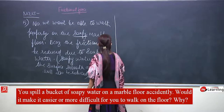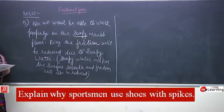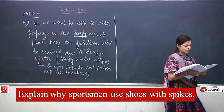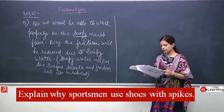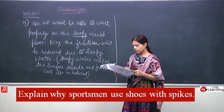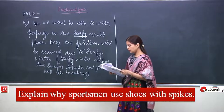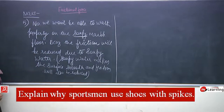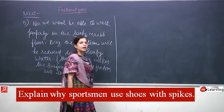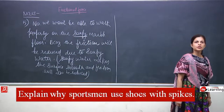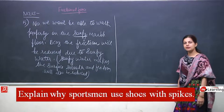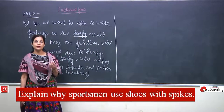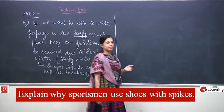That was question number 5. Now question number 6: explain why sportsmen use shoes with spikes. We are able to walk due to friction. When the surface is rough, more friction is created. If the shoes have spikes, the roughness between the shoes and the ground will increase, and it will increase the friction.